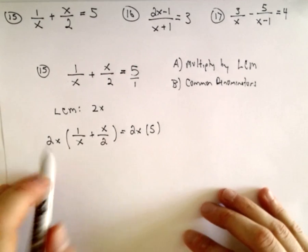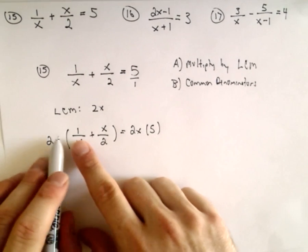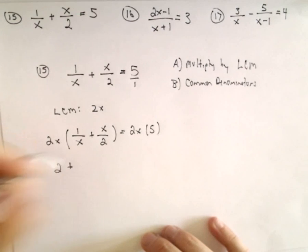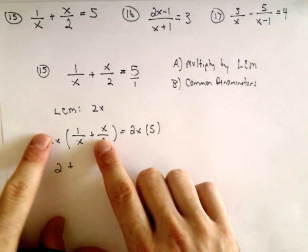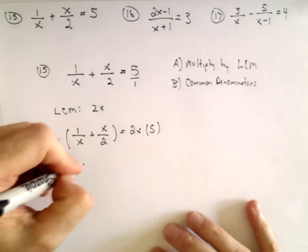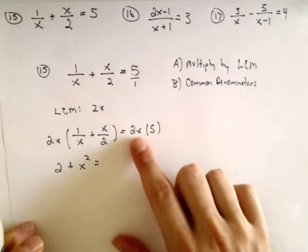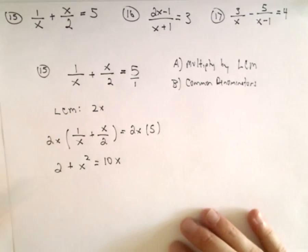I'm going to multiply both sides of the equation by 2x, and then we'll just see what's left over. We have to distribute, so 2x times 1 over x, the x's will cancel, we'll just be left with 2. When I distribute, the 2's will cancel, I'll be left with x squared. And then 2x times 5, that's going to give us 10x.